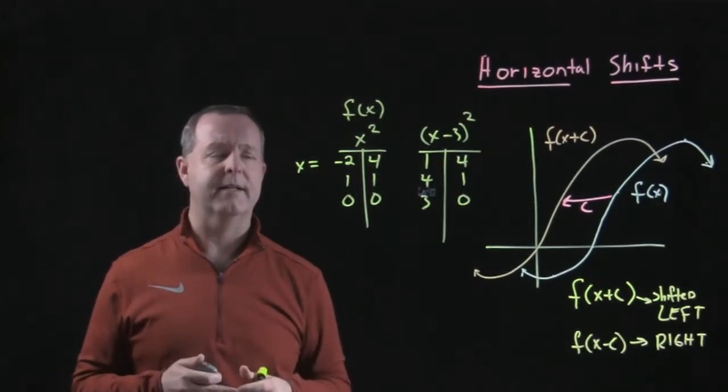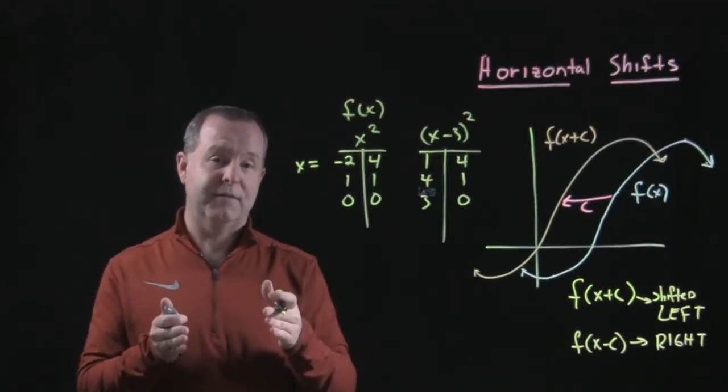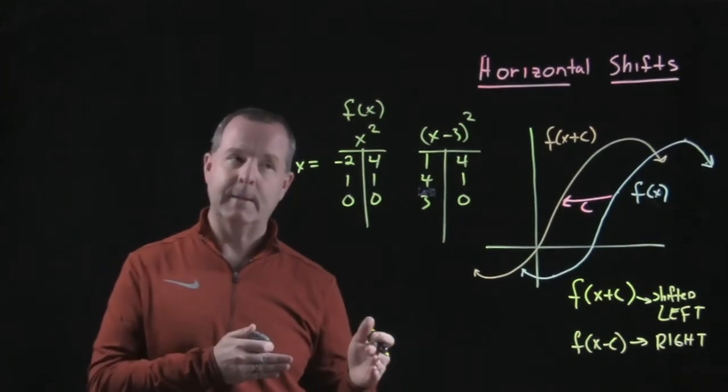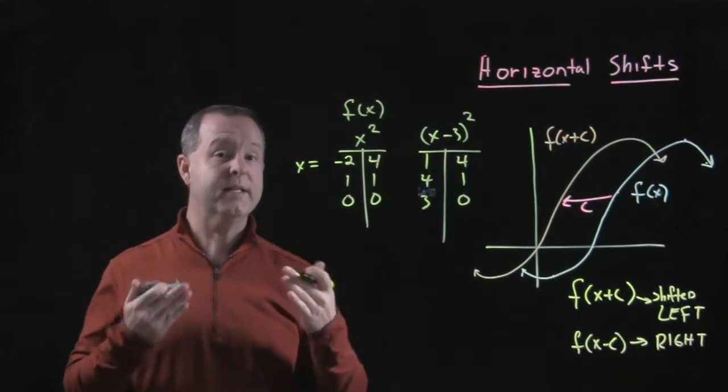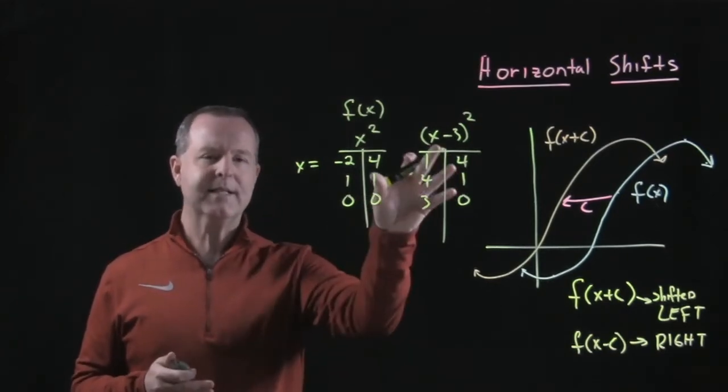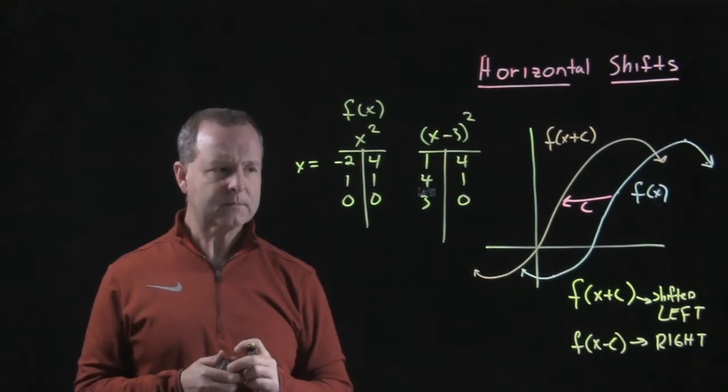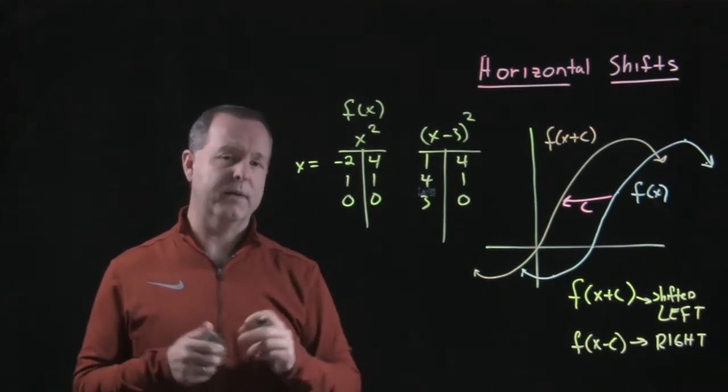So I hope that's giving you enough confidence that in order for a function to shift to the right, I'm subtracting a constant within the function. It is counterintuitive, but if you ever get stuck on that, please come back to this idea so we can get a sense of what's happening.